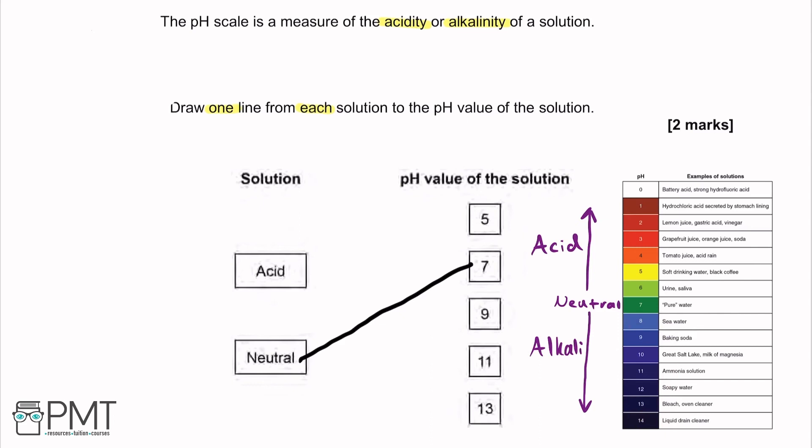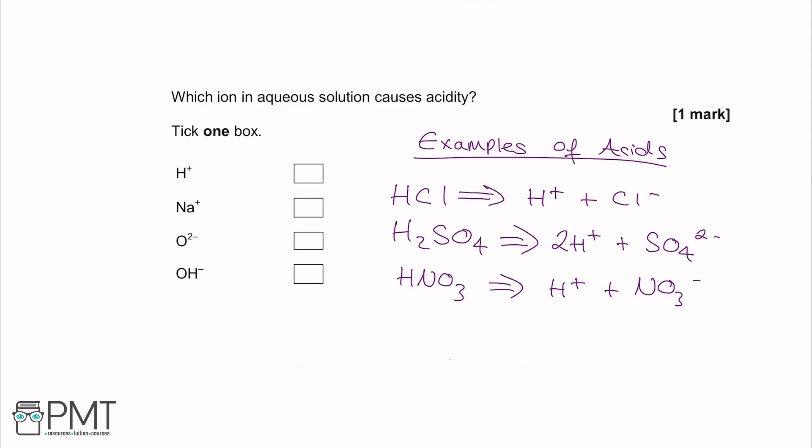From those numbers we're looking at which one is lower than 7, and that is 5. The next part asks which ion in aqueous solution carries acidity. The options are H+, Na+, O2−, and OH−. Remember that an ion is something which has a charge — it may have gained or lost an electron.